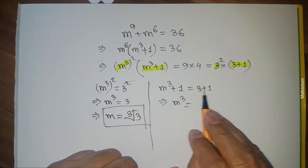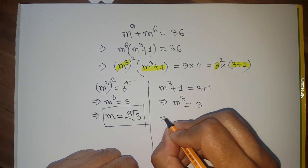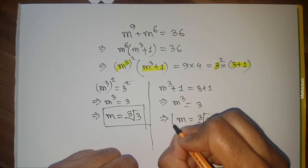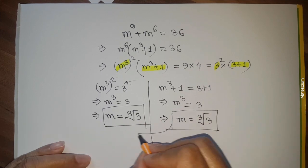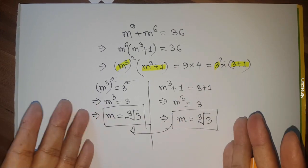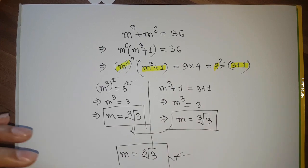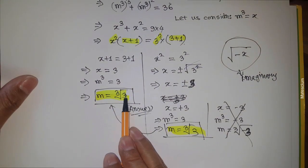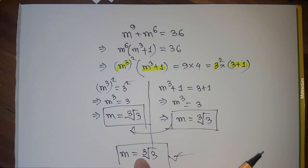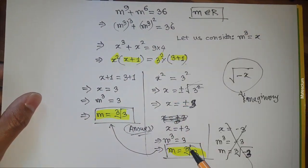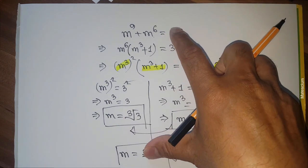The second solution is m³ + 1 = 3 + 1, so m³ = 3, and again m = ∛3 — exactly the same as the first solution. Both methods give the same answer: m = ∛3. This simpler approach confirms the result we found in the previous method.